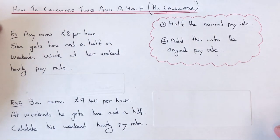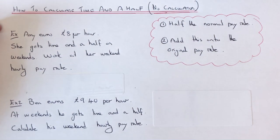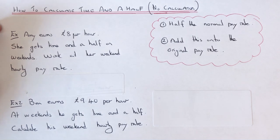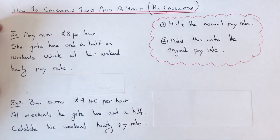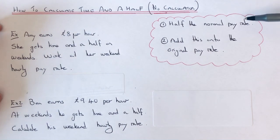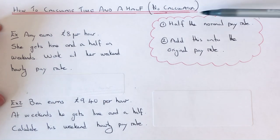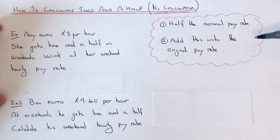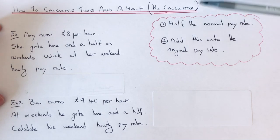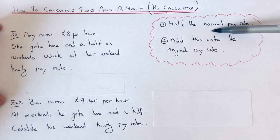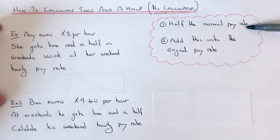Hi guys, today I'm going to show you how to work out a time and a half from the original pay rate, and I'm going to show you how to do this without a calculator. All we've got to do is follow the two steps in this red cloud. The first step is you have to half the normal pay rate.